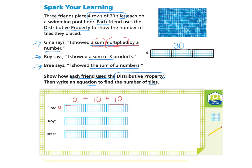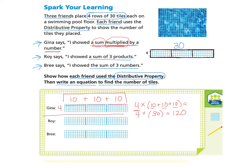Gina thought it was easy to add 10 plus 10 plus 10 to find out the total amount of squares in each of the four rows. She used the distributive property by first adding 10 plus 10 plus 10 to find the total number of squares, and then she multiplied by a number — that number was 4, because there were four rows. 10 plus 10 plus 10 makes 30, and then she multiplied 4 by 30 to get 120. That was Gina's way of using the distributive property.